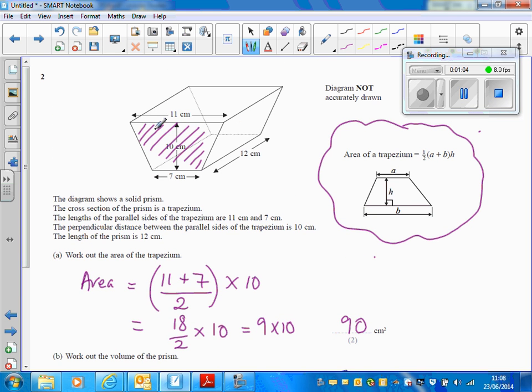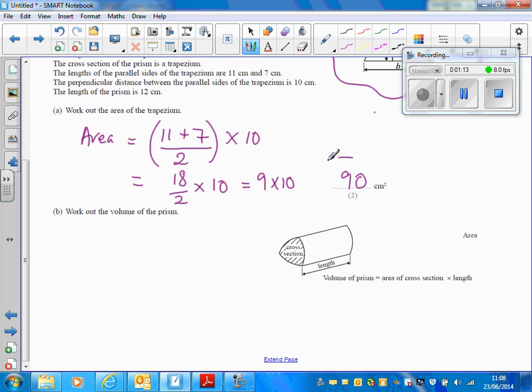Now in this case, the area of the cross-section is the area of the trapezium that we've just worked out, and we're going to multiply it by the length, which is 12. So the area of the trapezium from part A was 90. All I need to do to find the volume of the prism is multiply 90 by this length, which is 12.